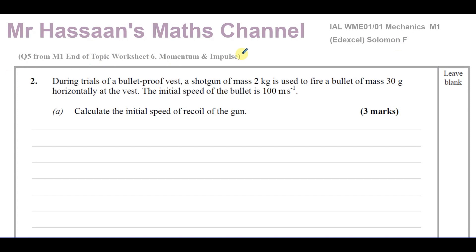This question says: during trials of a bulletproof vest, a shotgun of mass two kilograms is used to fire a bullet of mass 30 grams horizontally at the vest. The initial speed of the bullet is 100 meters per second. Calculate the initial speed of recoil of the gun.